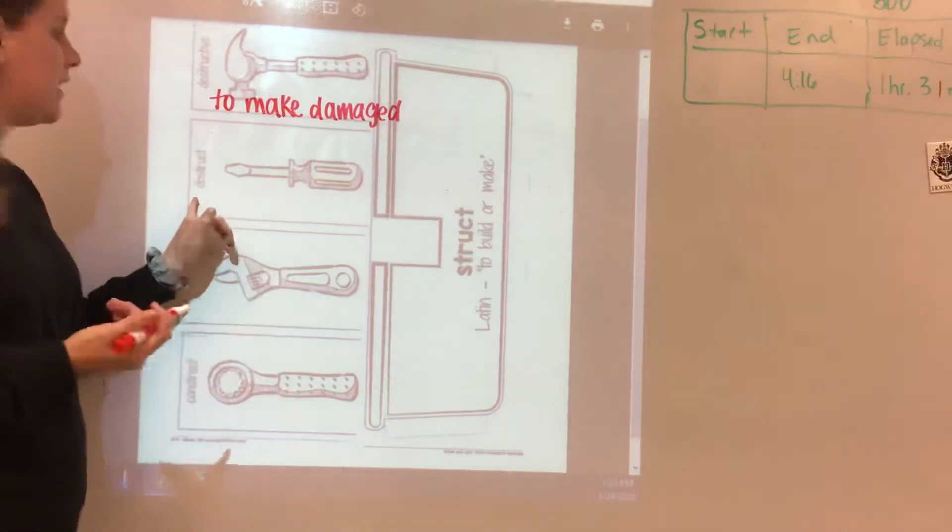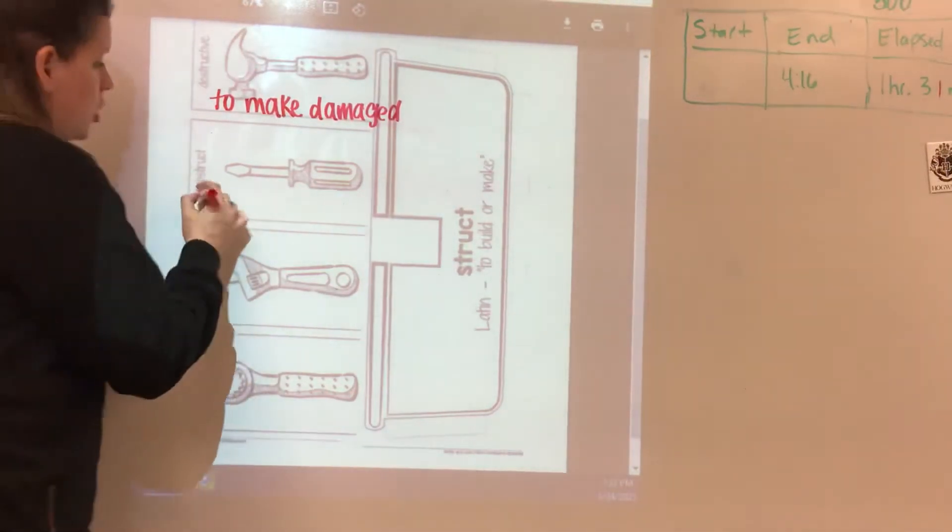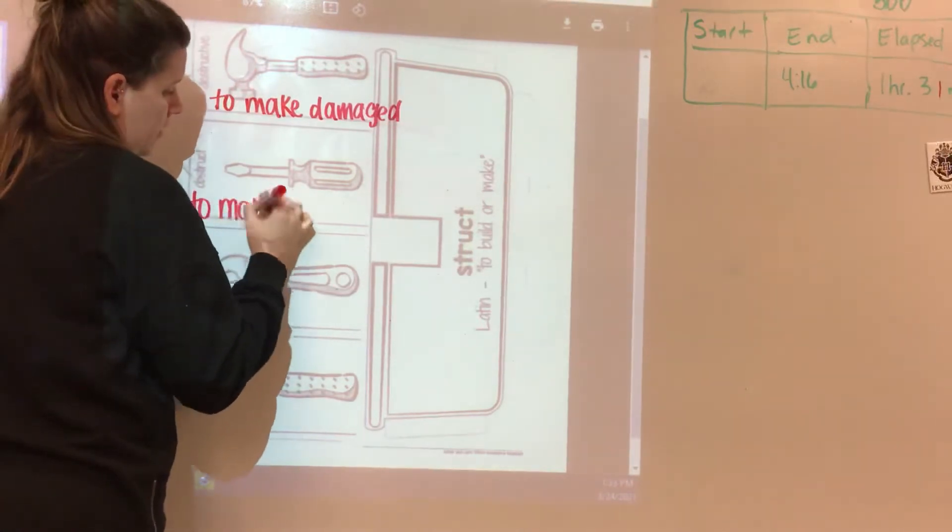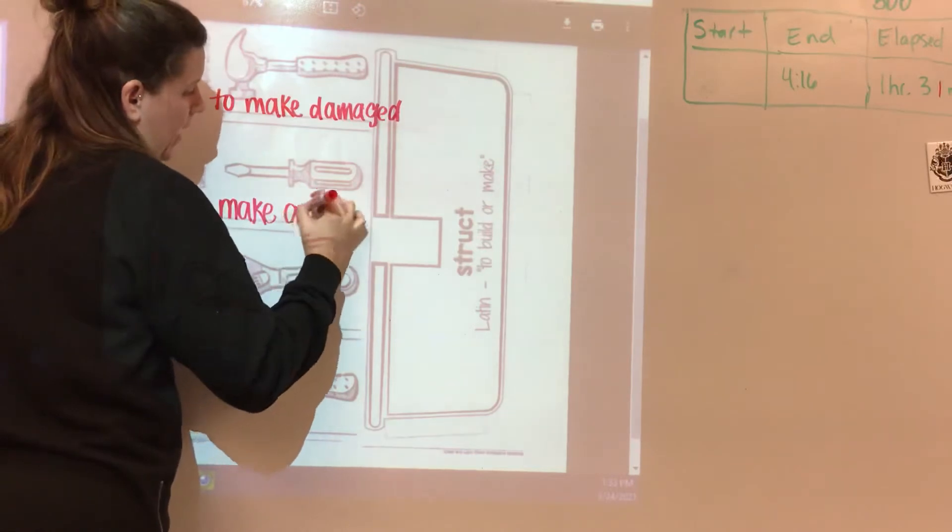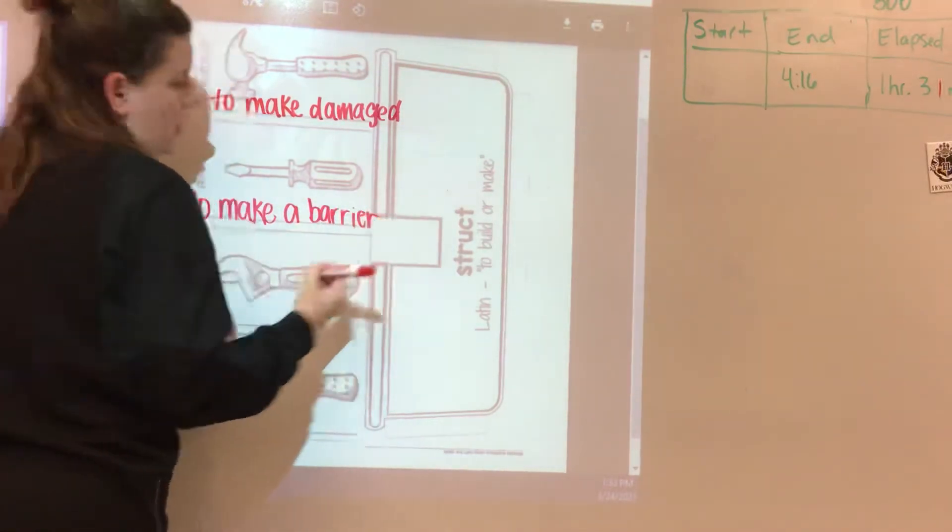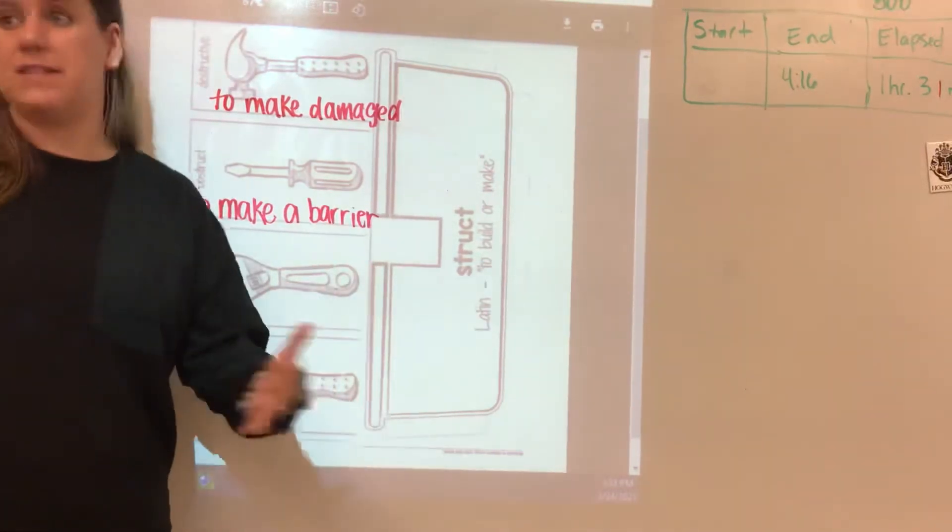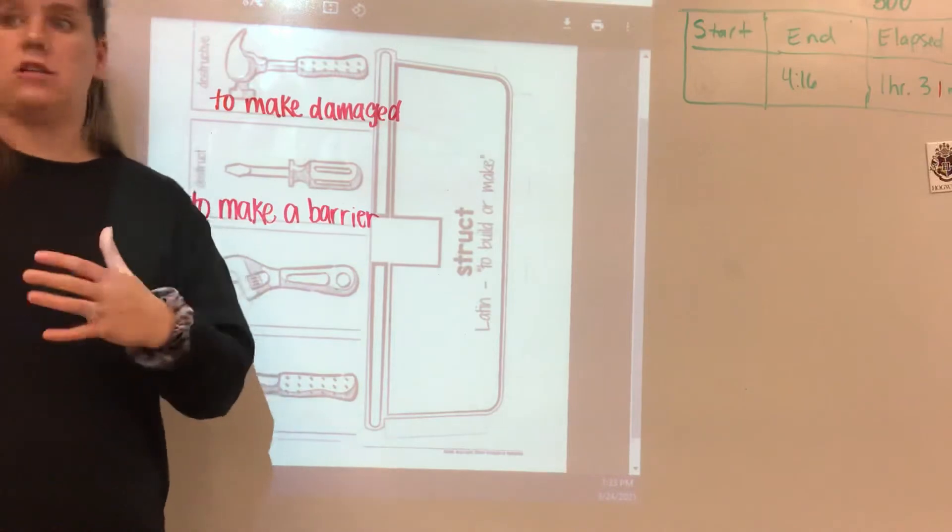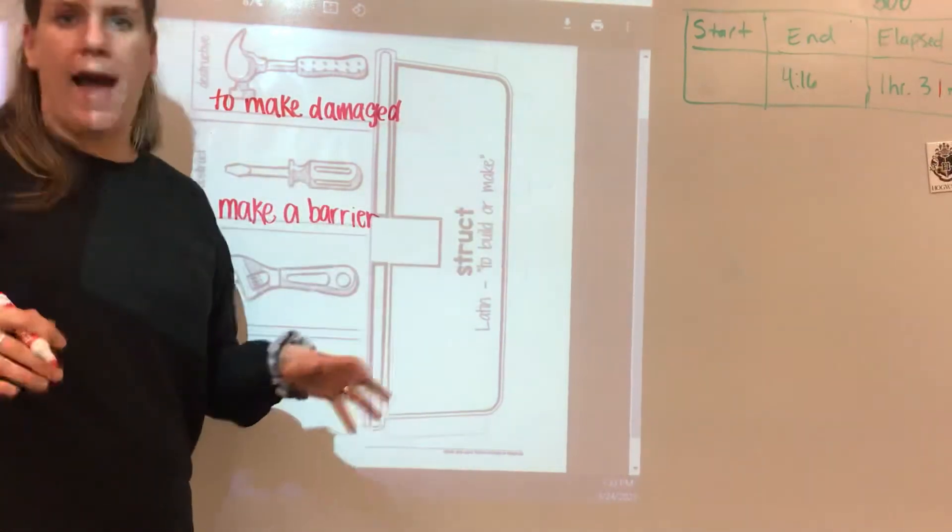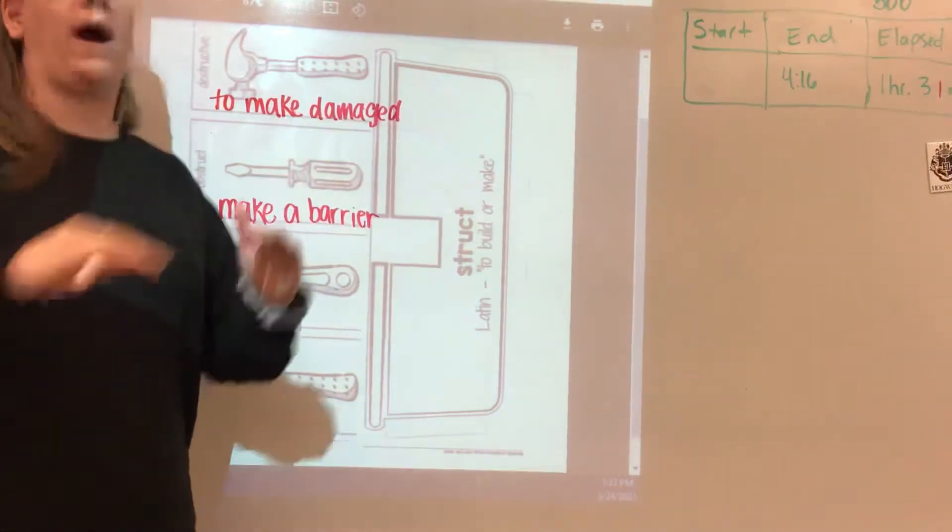Our next word is obstruct. And obstruct means to make a barrier. So obstruct would mean that you would be having something or making something so that somebody couldn't do something. So it's obstructing my path, meaning it is there and it is making sure that I can't go where I need to go.